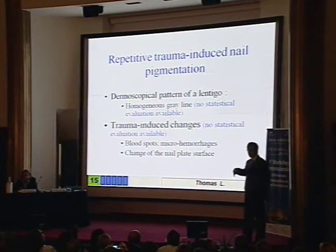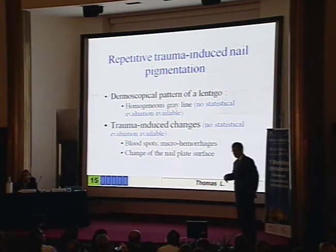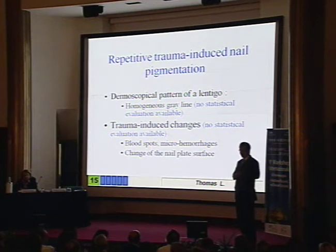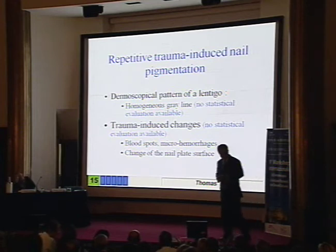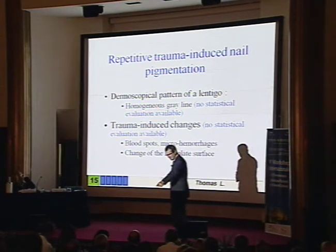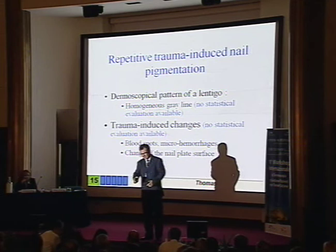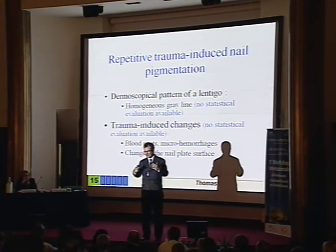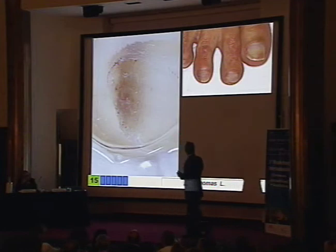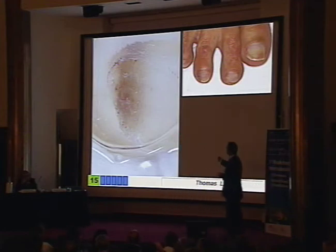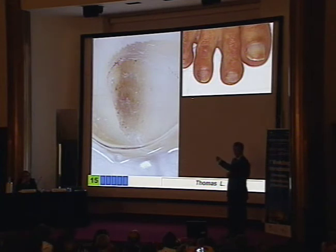A very common feature is repetitive trauma-induced pigmentation, especially on the toenails and especially in females, because they wear square shoes on triangular feet and it doesn't fit. This is due to chronic trauma induced by the boots, and it's very common in females. So it's grayish, and there is nothing to worry about.